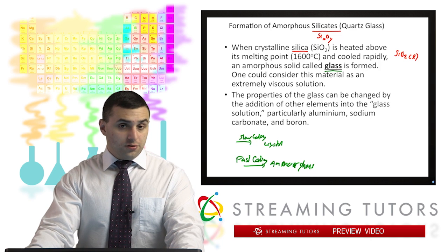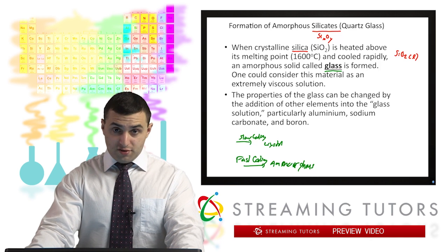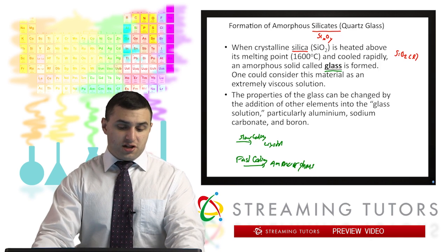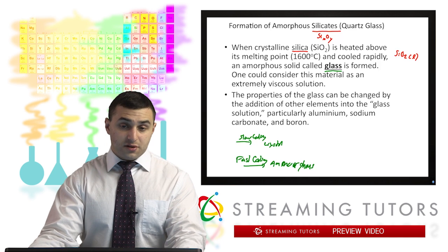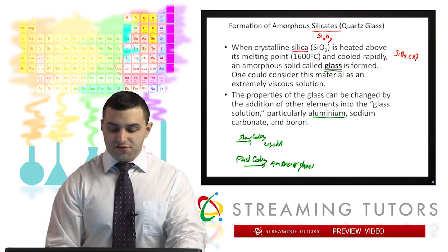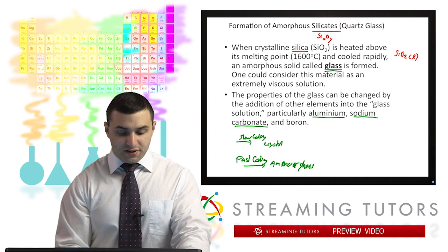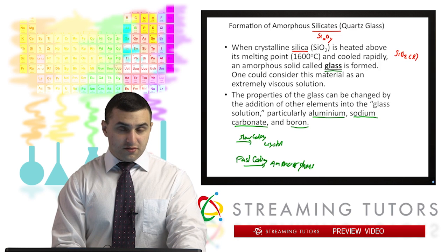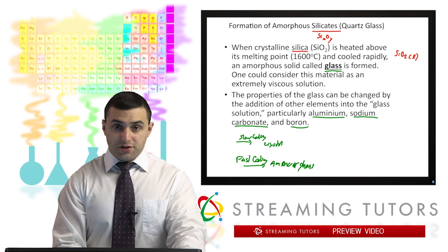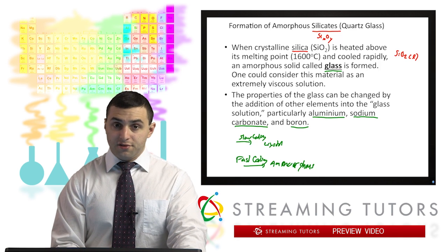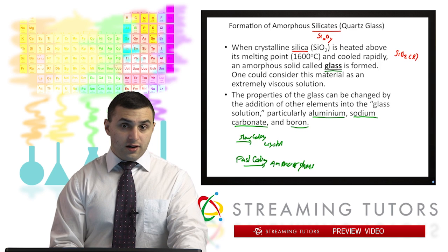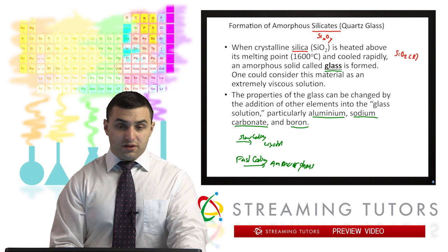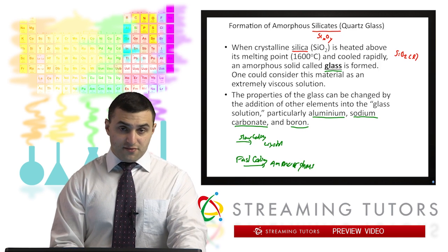Since we all know what glass is, we can also add different things into the glass to change its properties. Some of these things we could add are aluminum into the structure, sodium carbonate is another common additive into glass, and boron we can also add into glass. So that's why you have glass for lots of different applications. You can have glass for windows, glass for cookware, glass for heat resistance or light resistance, all these kinds of things.